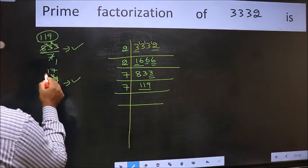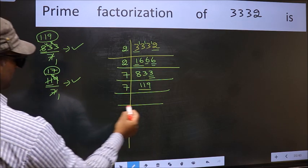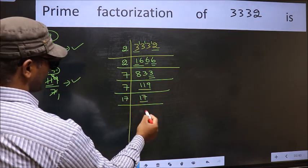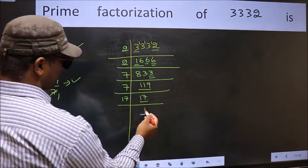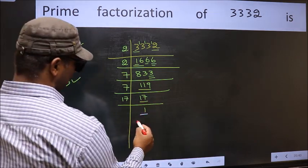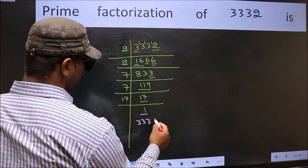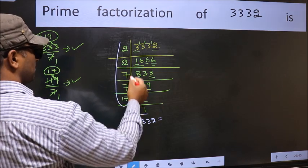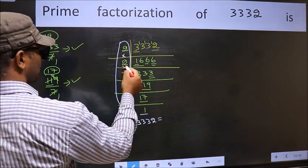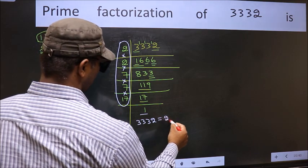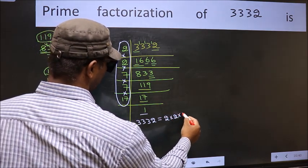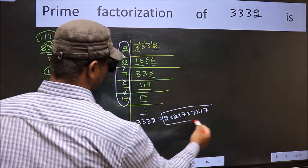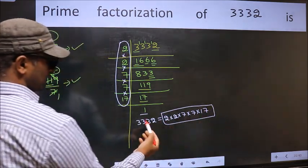So 7 here, and we write the quotient: 17. Now we have 17. 17 is a prime number, so 17 times 1 is 17, giving us 1 here. So the prime factorization of 3332 is the product of these numbers: 2 × 2 × 7 × 7 × 17. This is the prime factorization of 3332.